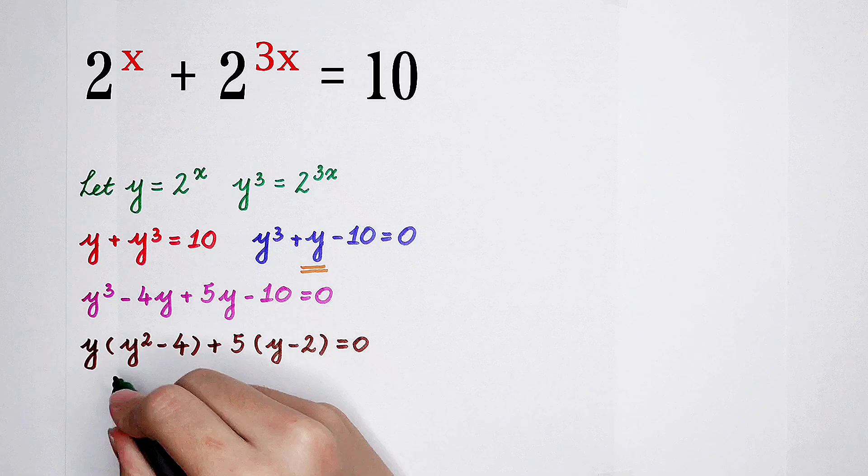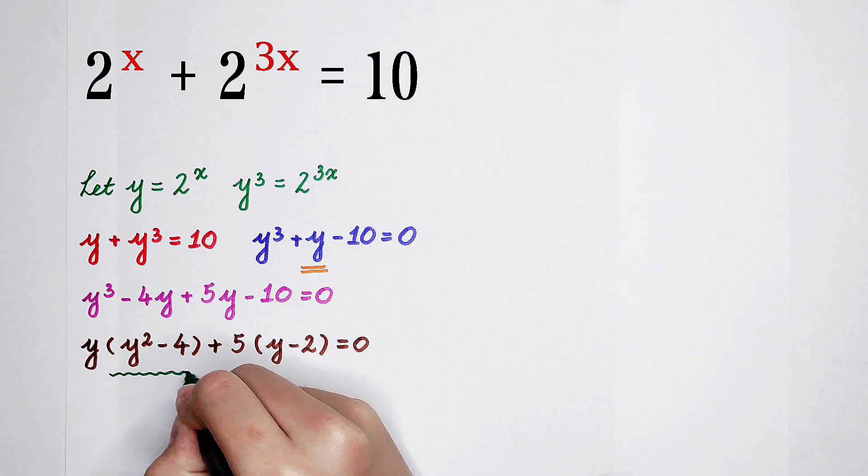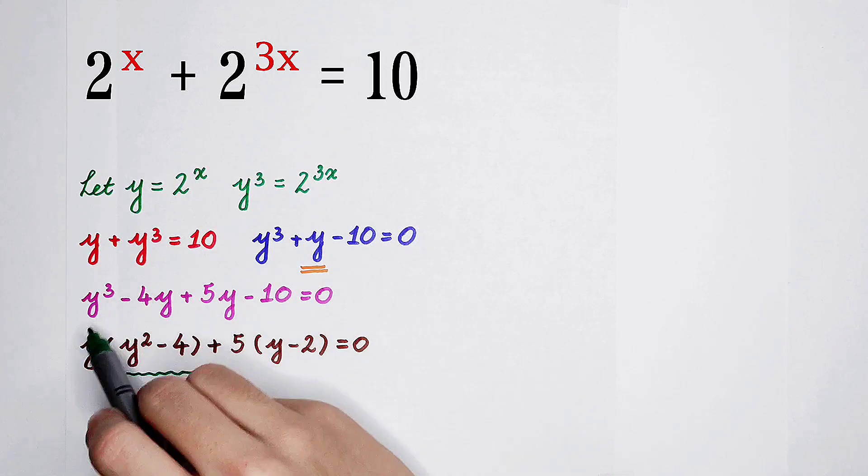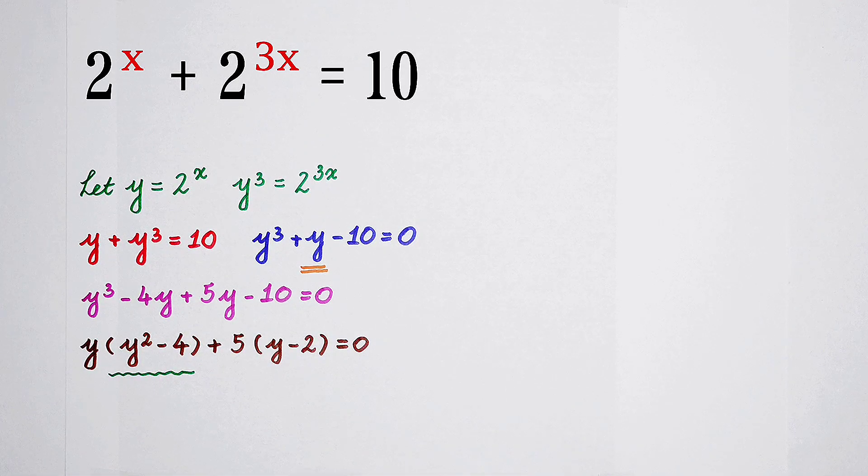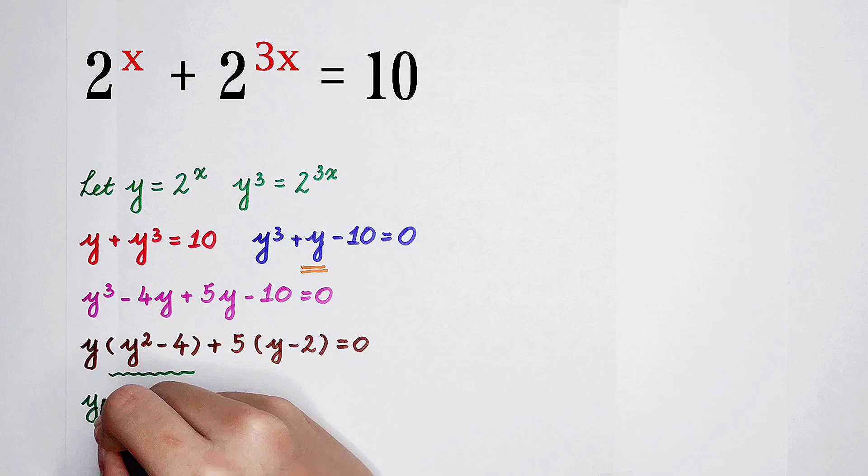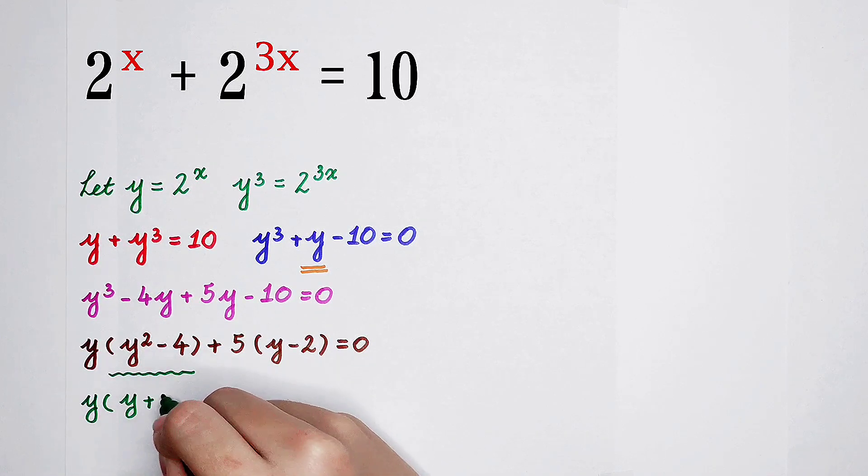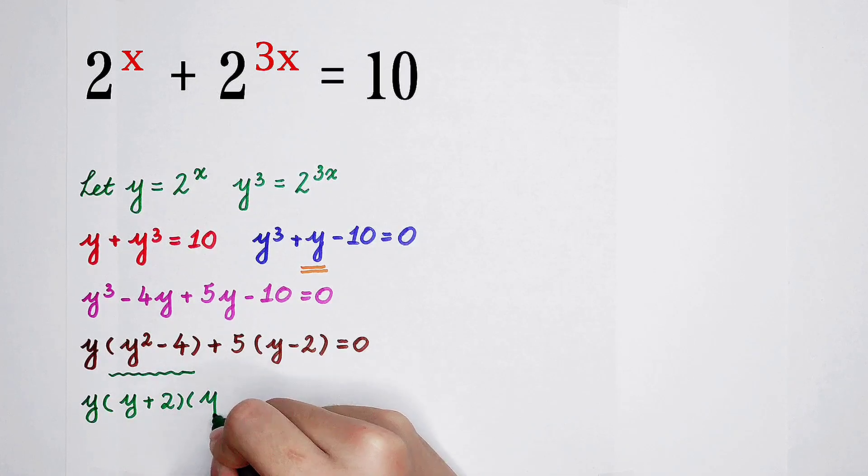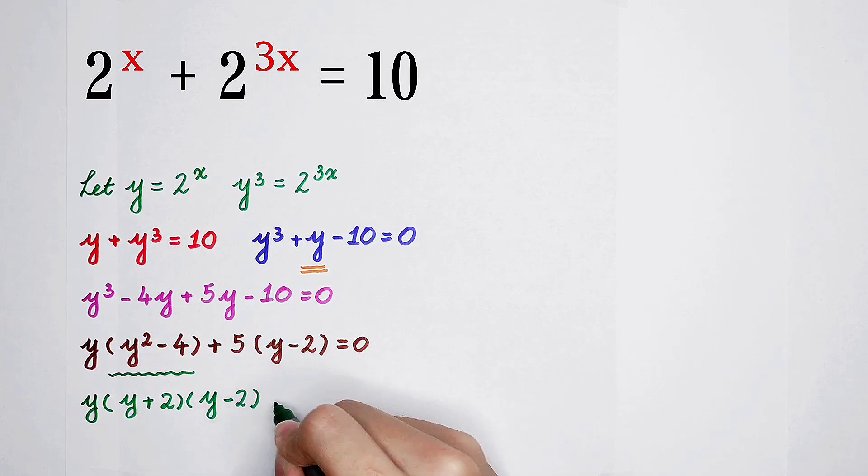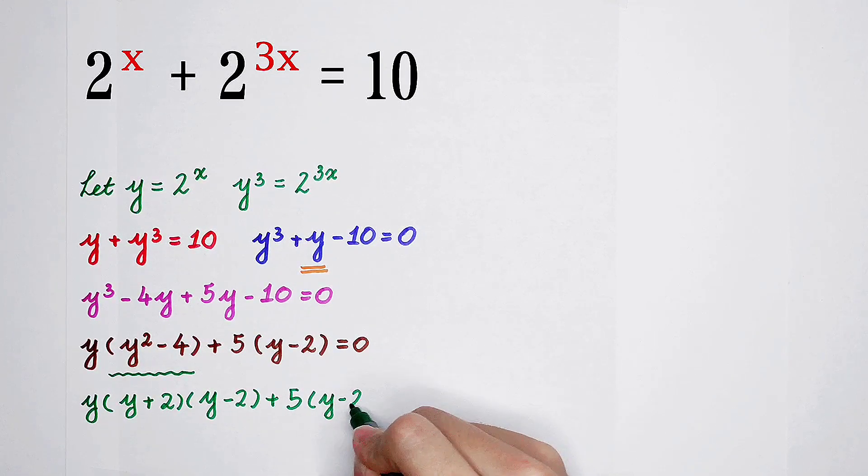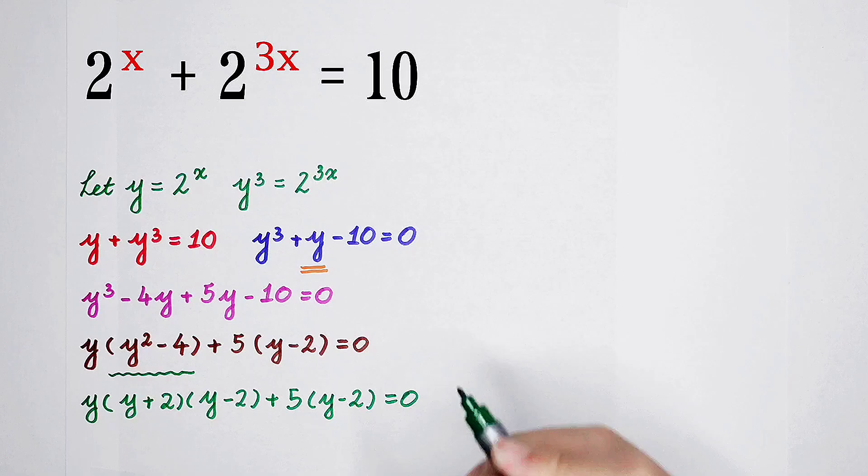Pay attention. Because y to the power 2, minus 4, it can be continued factored. So this is, use the third binomial formula: y plus 2, times y minus 2, and then plus 5 times y minus 2.